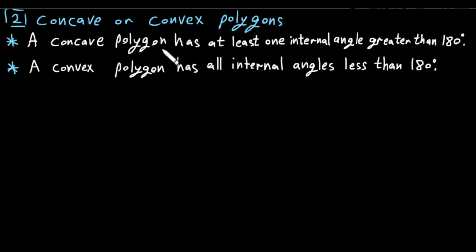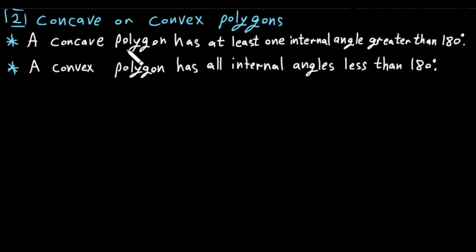A concave polygon has at least one internal angle greater than 180 degrees. For example, a triangle cannot be a concave polygon because it's impossible to have a triangle with an angle greater than 180 degrees. A convex polygon has all internal angles less than 180 degrees.